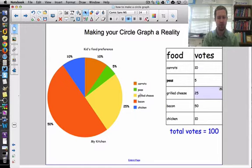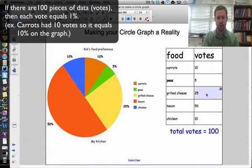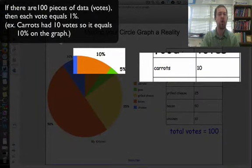Peas are green. Grilled cheese is yellow. And chicken is blue. So we have our percentages here as well. And if we were to add those up, it should equal 100 votes, so 100%. Each vote would equal 1% in this case.